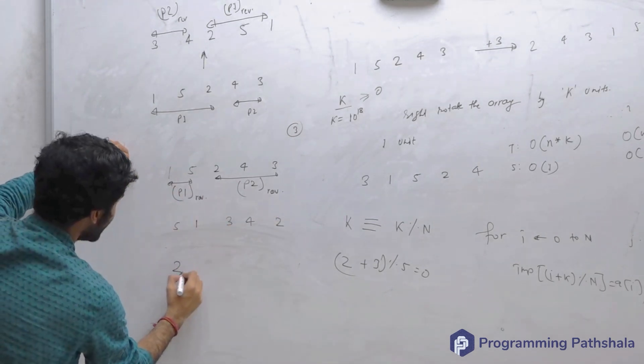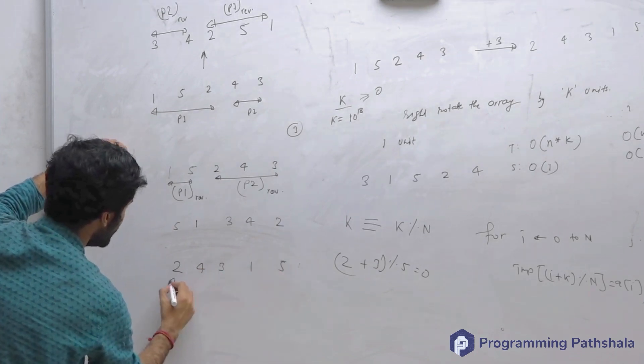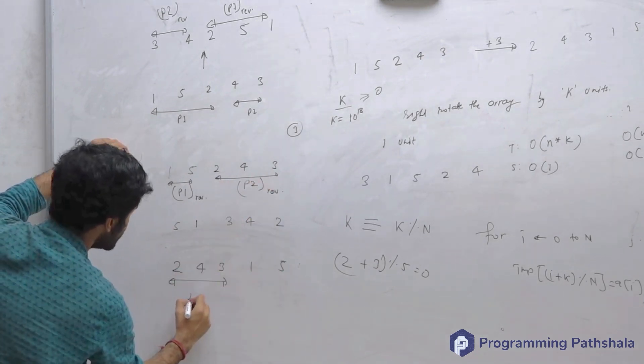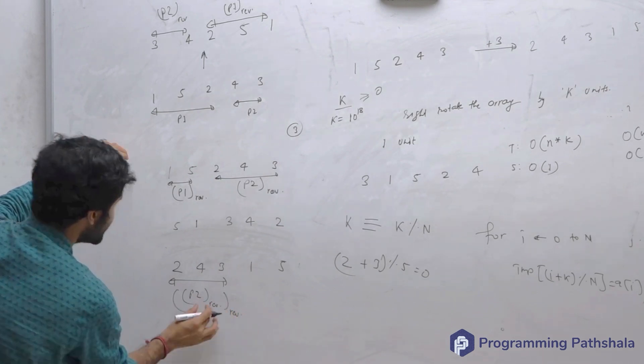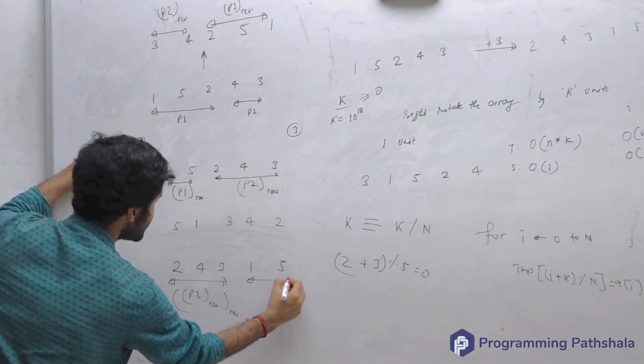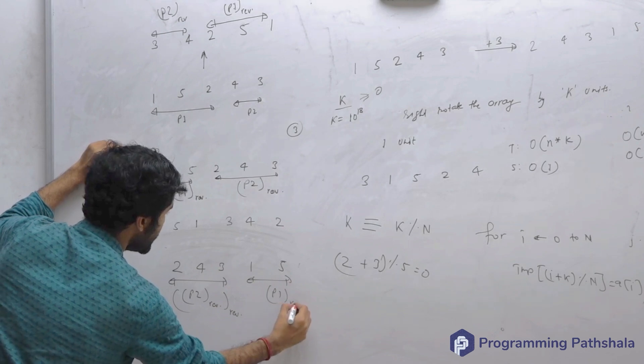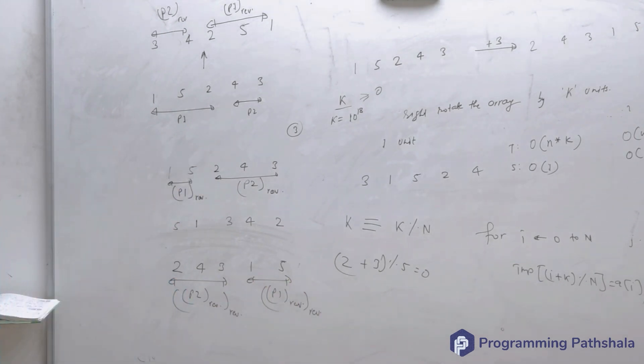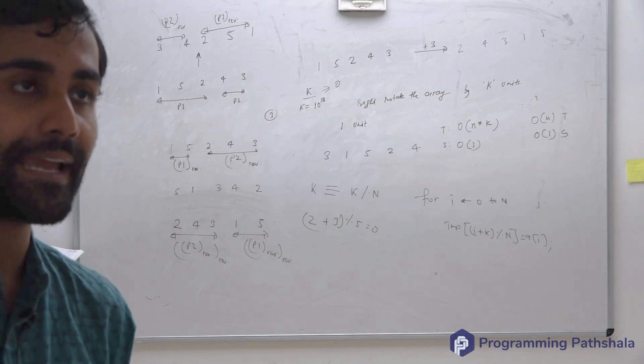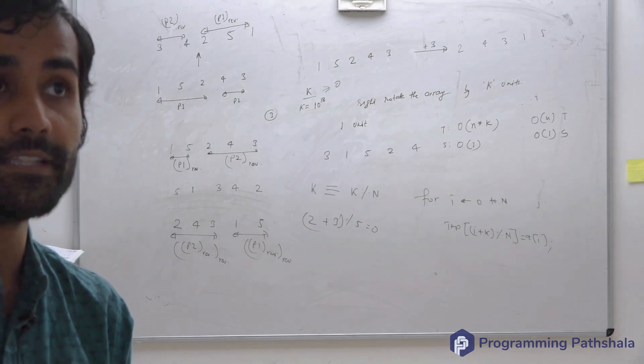And this 2, 4, 3, 1, 5 is what? This is p2 reverse reverse, which is same as p2. And what is this? This is p1 reverse reverse, which is same as p1. So this is simple enough. Can it be done in order n time without any extra space?